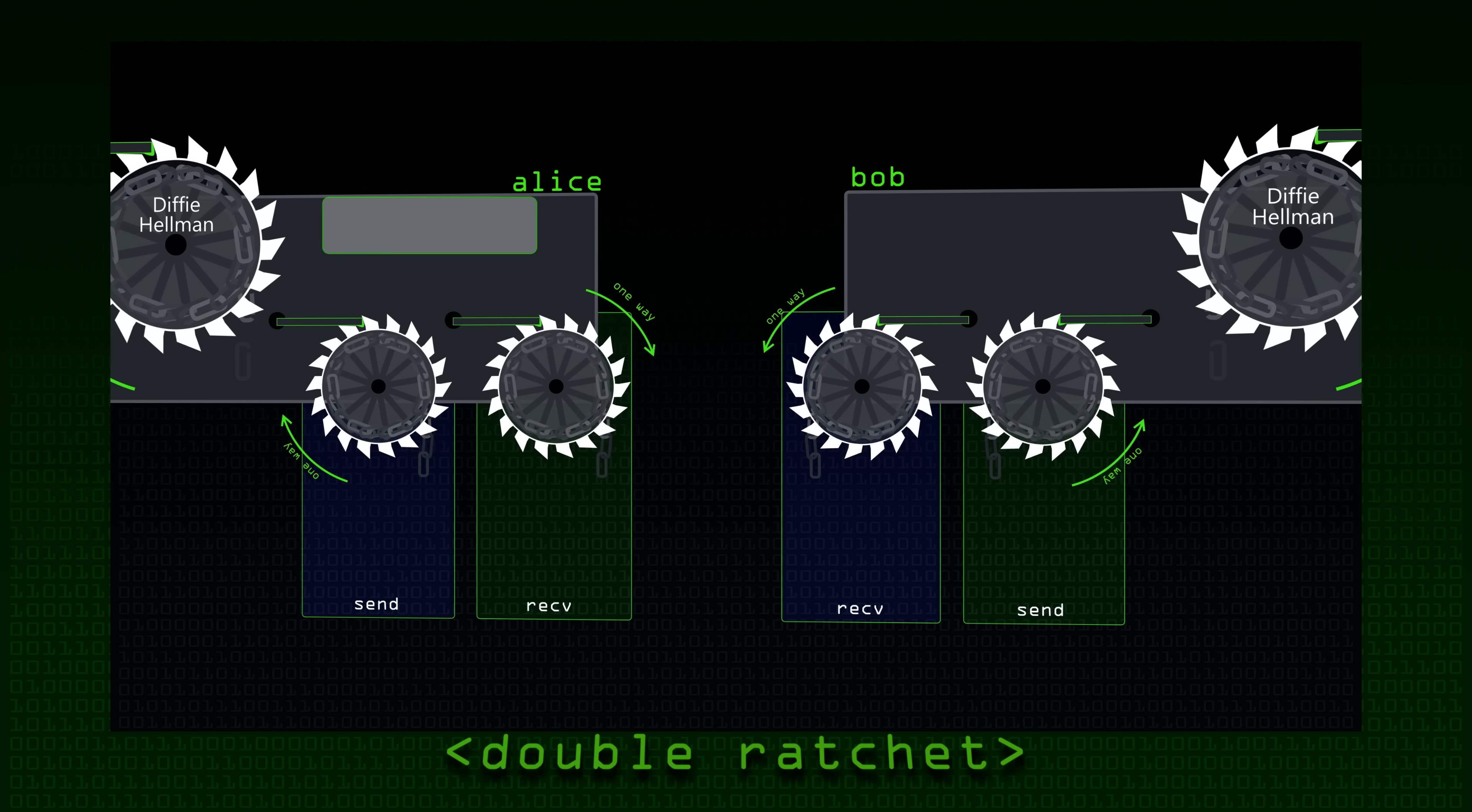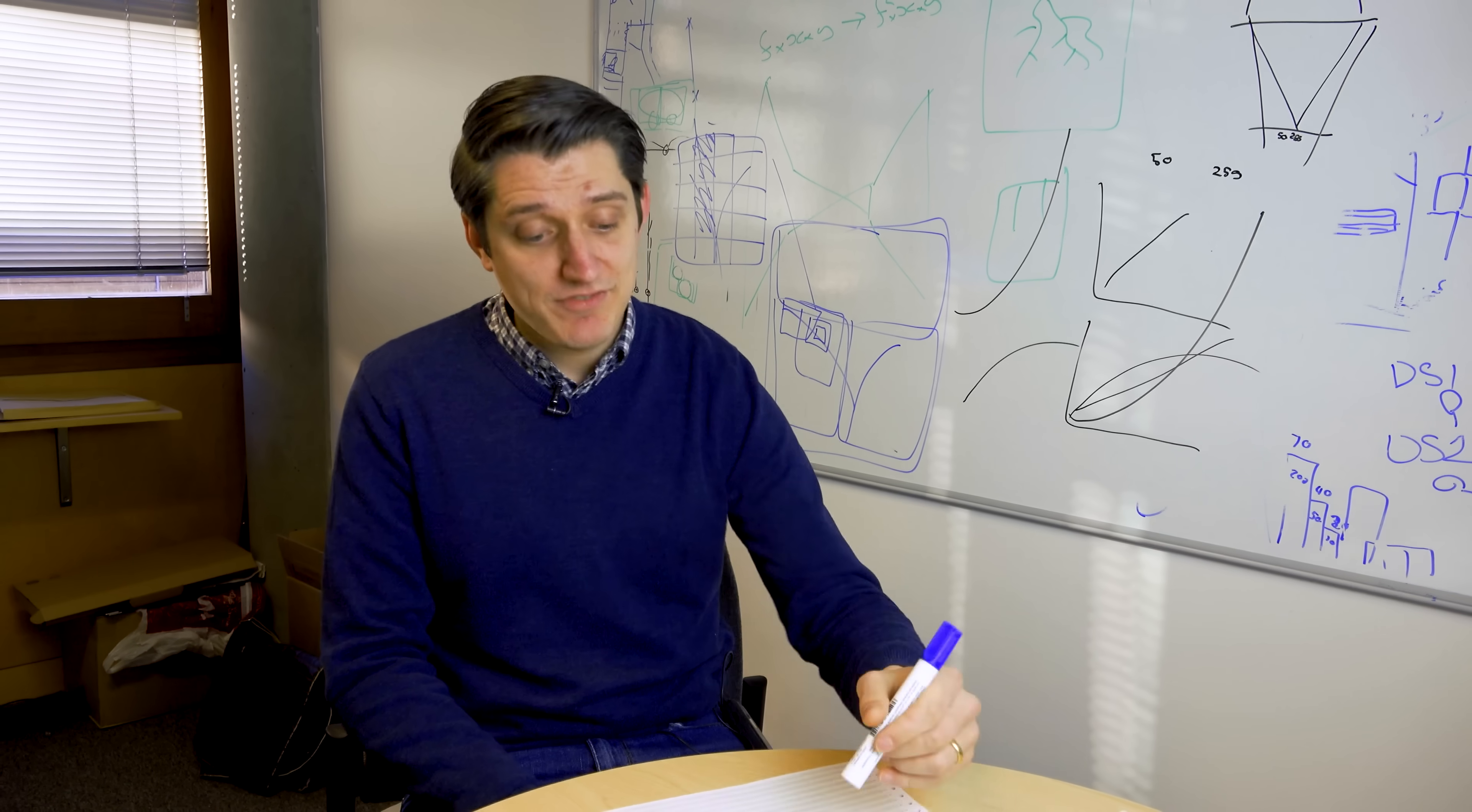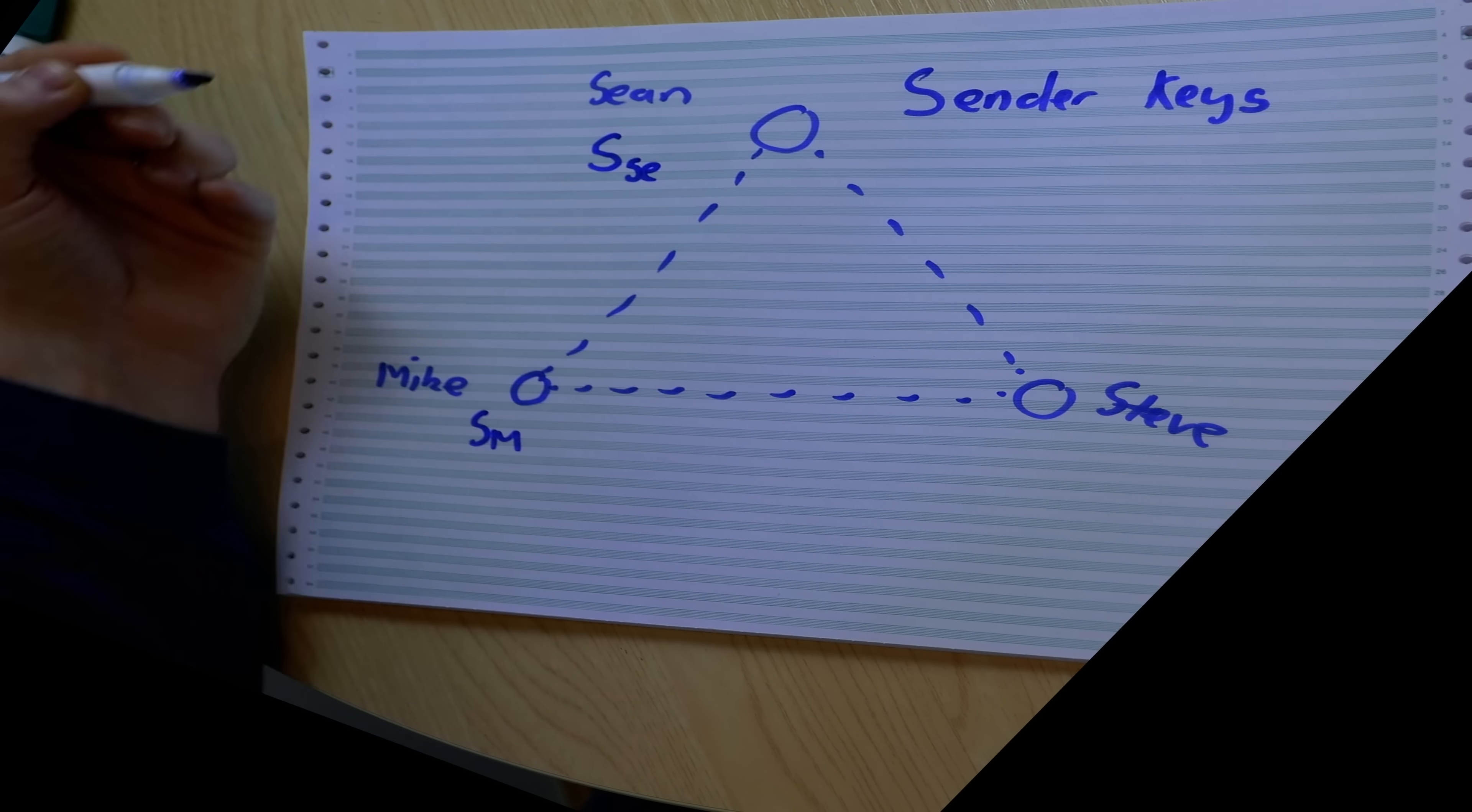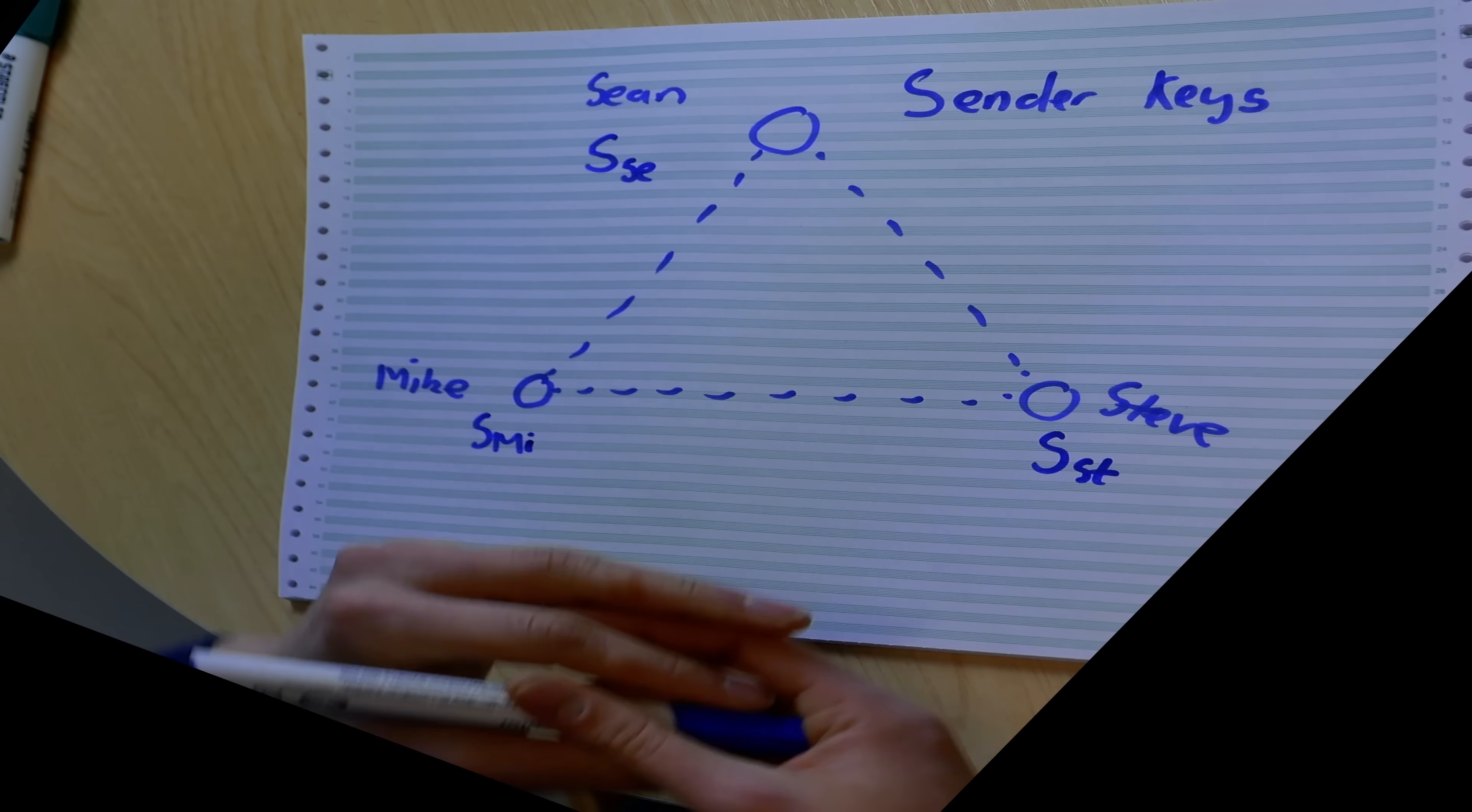So I'm going to write sender keys here. Each person, a bit like our sending and receiving chains in a normal protocol, each person comes up with a sending key. This is iterated every message. So we have this perfect forward secrecy. So how do I give this to you? Well, I use the two-way communication we already have. So I have a sender key for me. You have a sender key for Sean. This is not going to work. It's going to go wrong, isn't it? And this is a sender key for Steve. Anyway, so at the very beginning, we say, we've established a group.